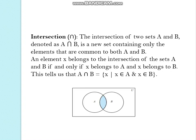The intersection. The intersection is operation defined on two sets A and B. Denoted as A intersection B is a new set containing only the elements that are common to both A and B. In the shaded region you can see that that is the region which is common to both A and B.